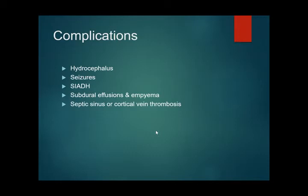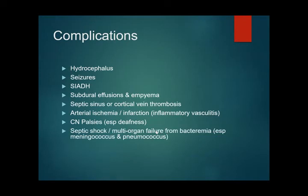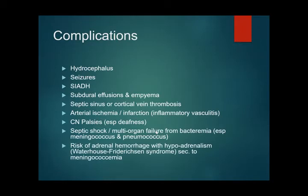Arterial ischemia from meningitis can cause inflammatory vasculitis and stroke in various areas of the brain. Cranial nerve involvement — especially deafness due to vestibulocochlear nerve involvement — is common with acute bacterial meningitis. Septic shock or multi-organ failure from bacteremia occurs especially with meningococcus and pneumococcus.